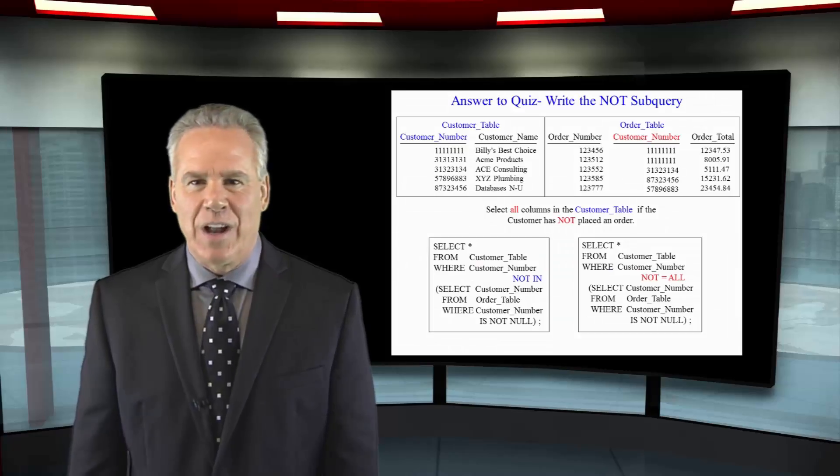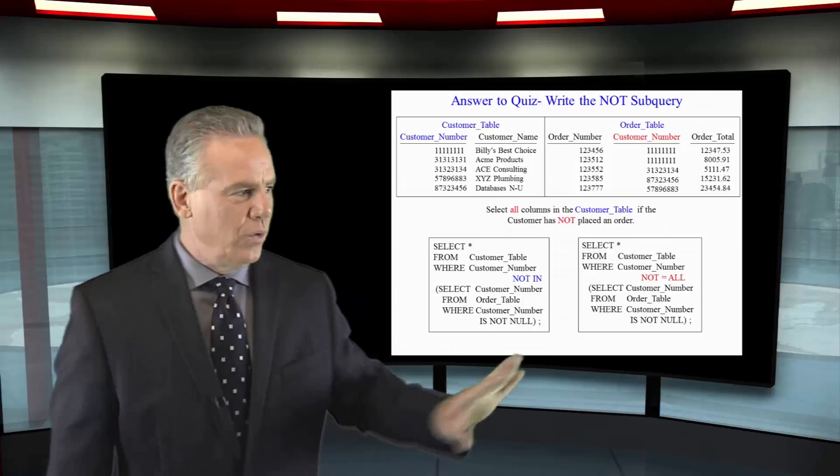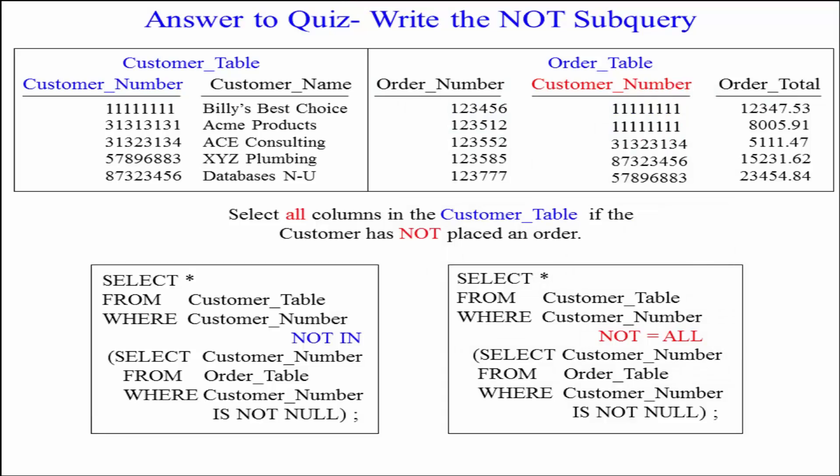I've written this a couple of ways, but you're going to want to use the first way for sure. Select everything from the customer table where customer number NOT IN, and then we'll select customer number from the customer table. I've also put WHERE customer number IS NOT NULL.